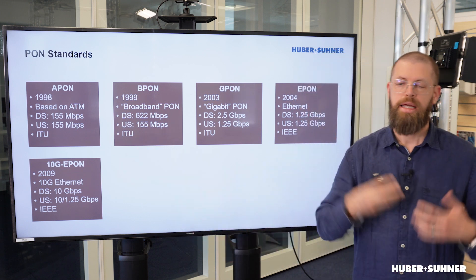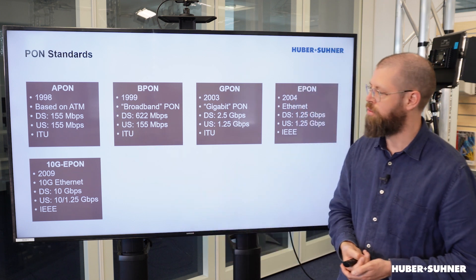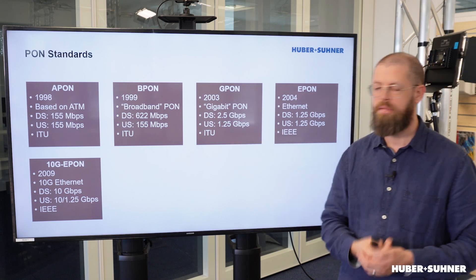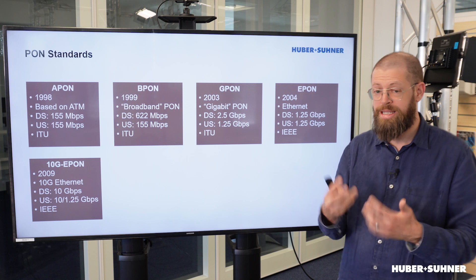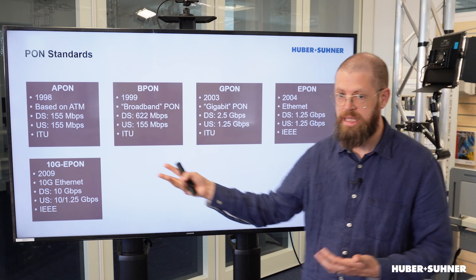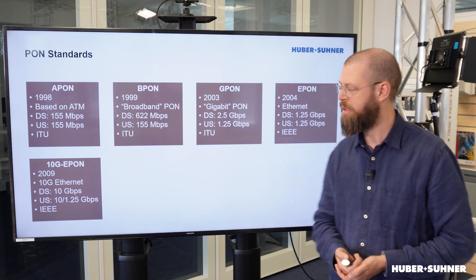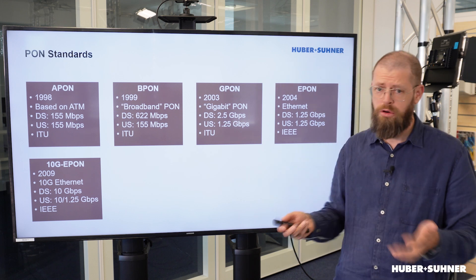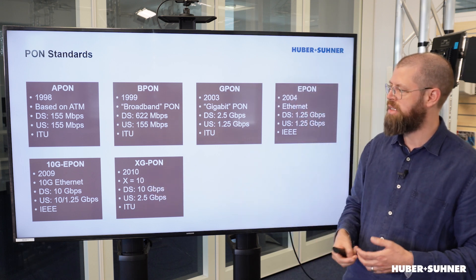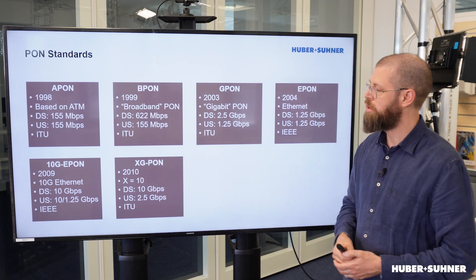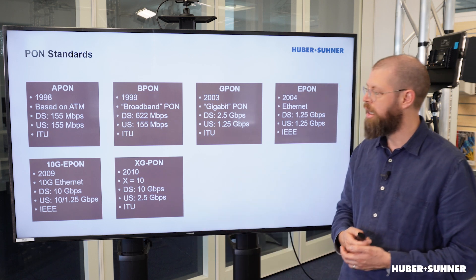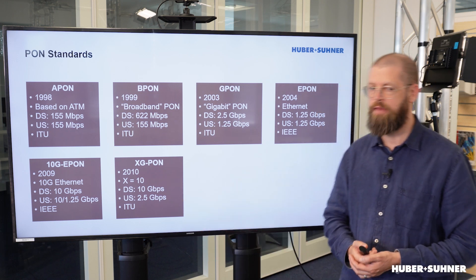Fast forward a few years: in 2009 the 10G E-PON standard was released. As the name states, it's 10G Ethernet, so the downstream is 10 gigabits, whereas the upstream is 10 gig or 1.25 gigabits. Being E-PON, it is an IEEE standard. The ITU was also working on a successor, and shortly after, in 2010, XG-PON was released — X as in Roman numeral 10. The downstream was 10G, and the upstream was 2.5 gigabits per second.